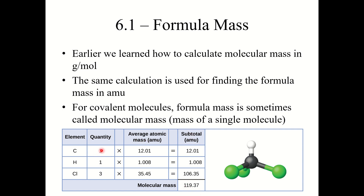So one atom of carbon, one atom of hydrogen, three atoms of chlorine — multiply and sum them up, and you get a molecular mass of 119.37 AMU.